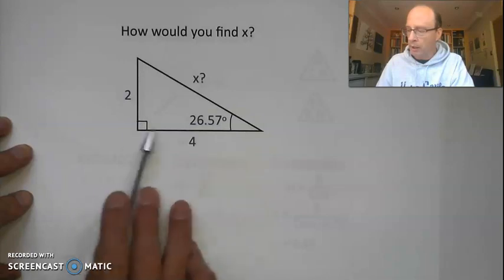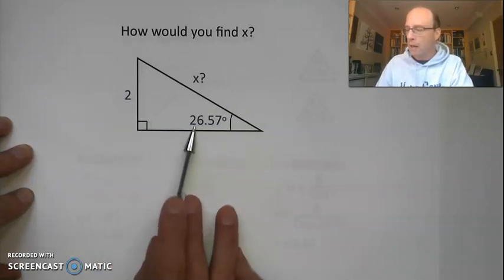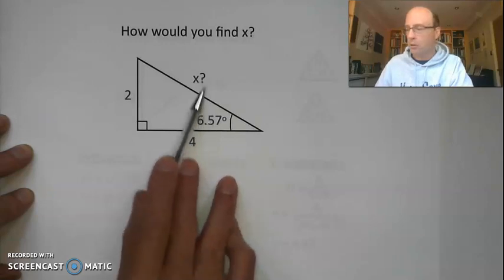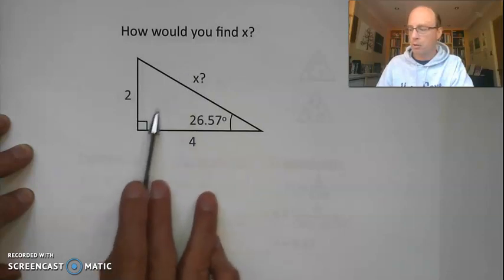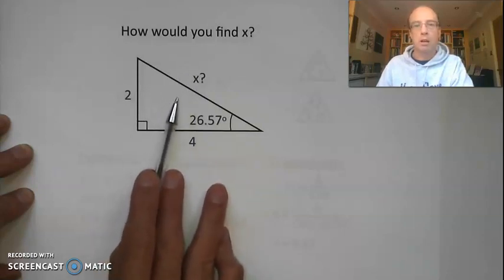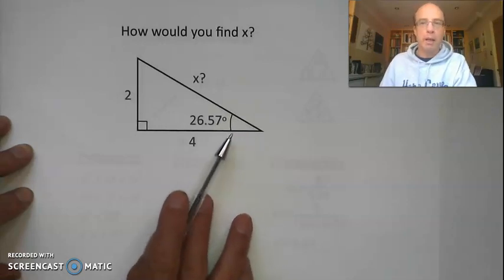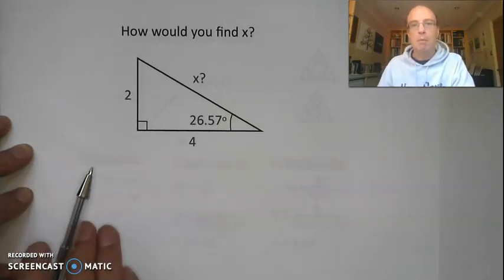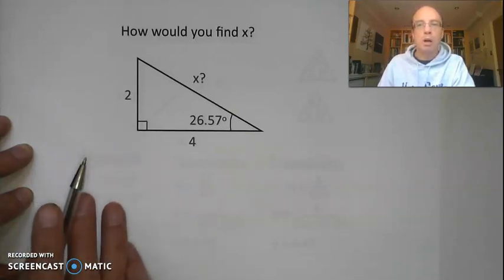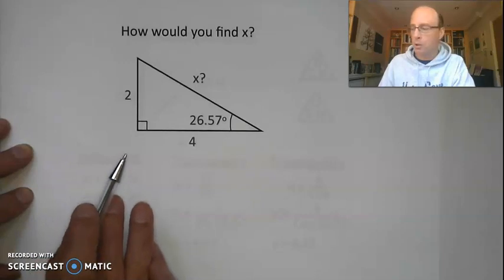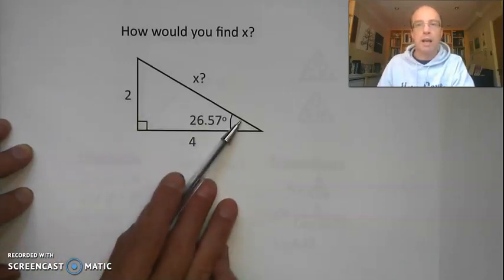We have a triangle here. It's right-angled. I've got two sides, two and four, an angle of 26.57 degrees, and I'm trying to find the length of my hypotenuse — the side opposite my right angle. I want to work out what that length of x is.